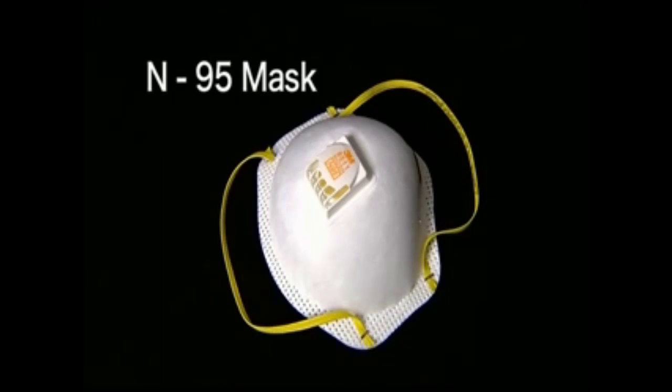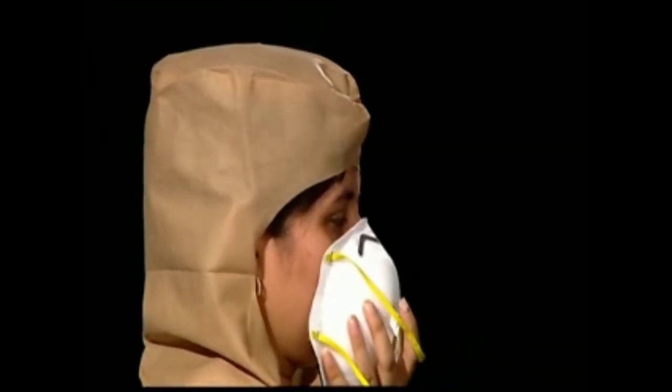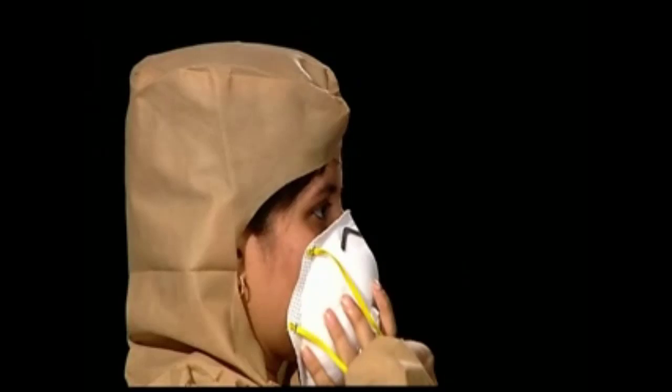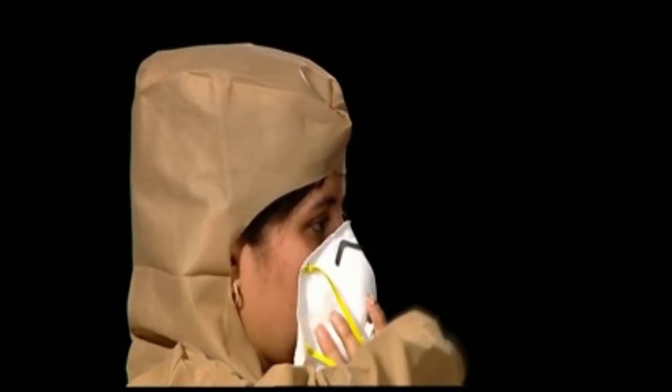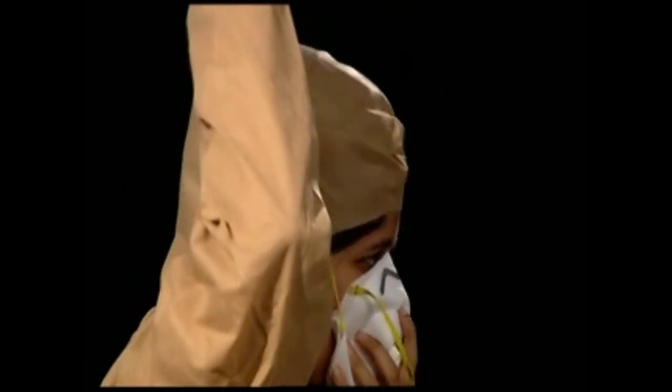To put the N95 respirator mask, place it on your face in a manner that it covers the nose and the mouth, using the other hand fasten the upper string. Once the strings are in place, use the index fingers of both hands to firmly clasp the metallic clip over the nose.